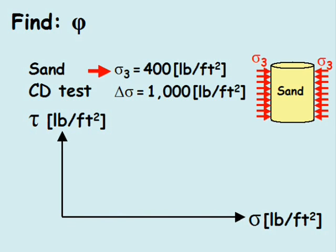Returning to our problem, we have a confining stress at failure of 400 pounds per square feet. So, sigma-3 is added to the plot.